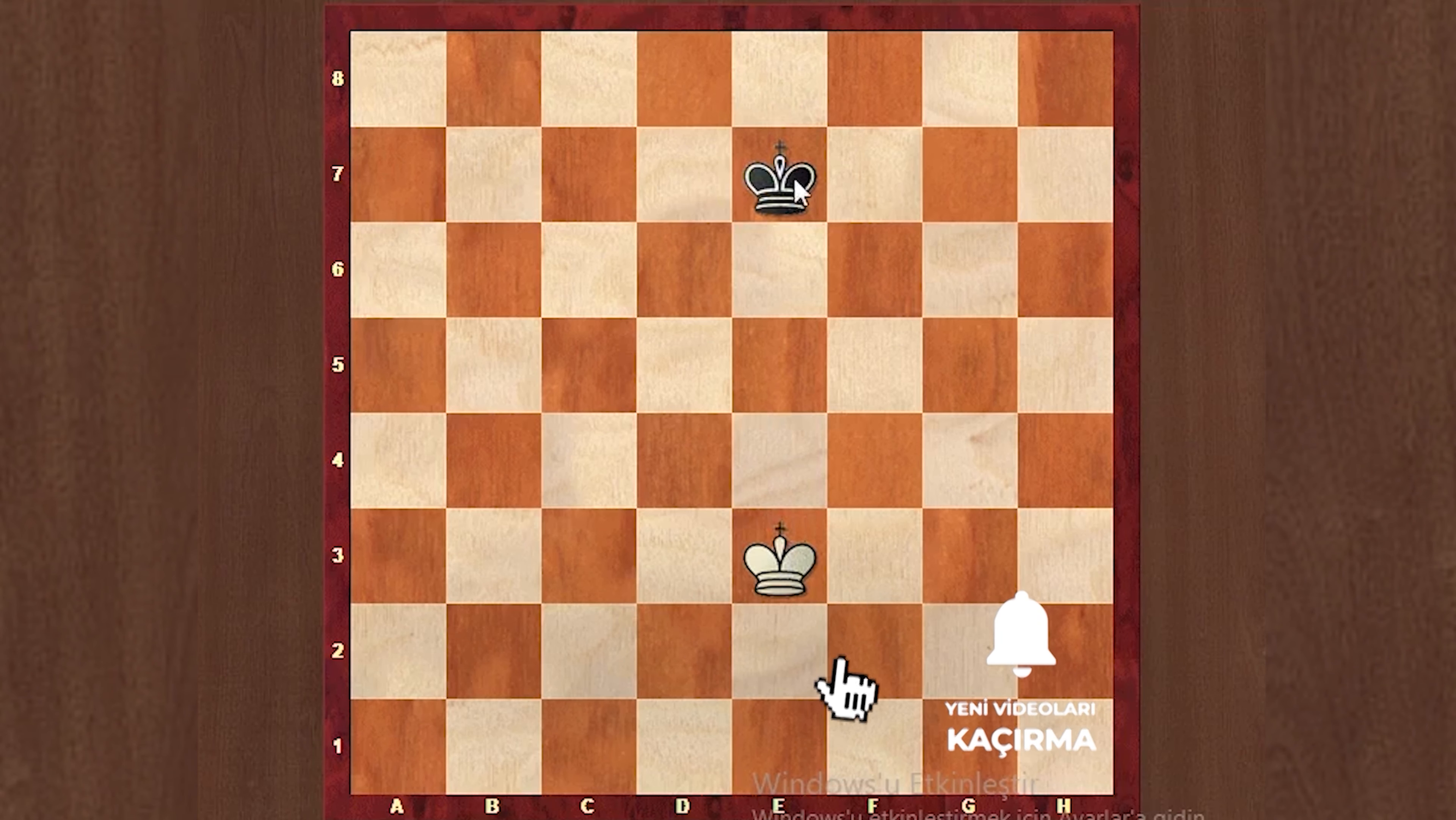What is checkmate? We will work on this in the following lessons. But now we will talk about the movement of the king. The king can move forward or backward, to the side, or diagonally. That is, it can move in any direction.